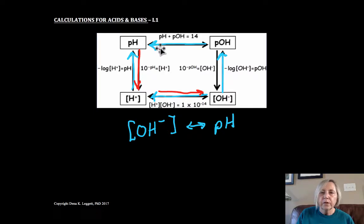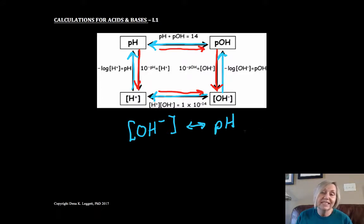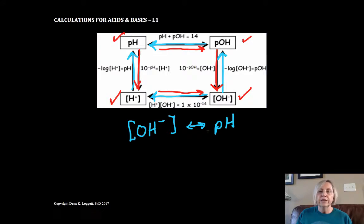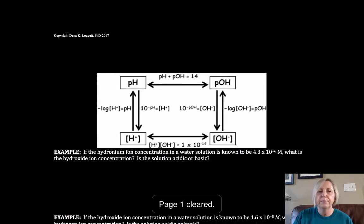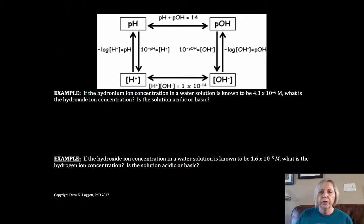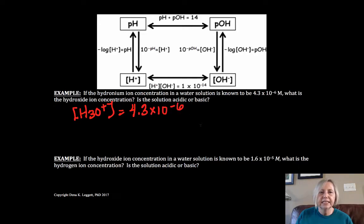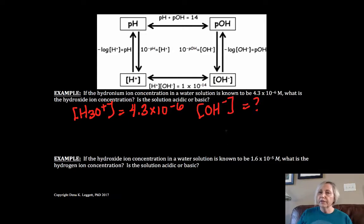If given pH, you'd go the opposite way: to H⁺ then to OH⁻, or to pOH then to OH⁻ — two different routes to the same corner. If you're in opposite corners of the map, it's always a two-step problem. Familiarize yourself with this map. Now let's apply it. The first example gives us [H₃O⁺] = 4.3×10⁻⁶ and asks for the hydroxide ion concentration and whether the solution is acidic or basic.